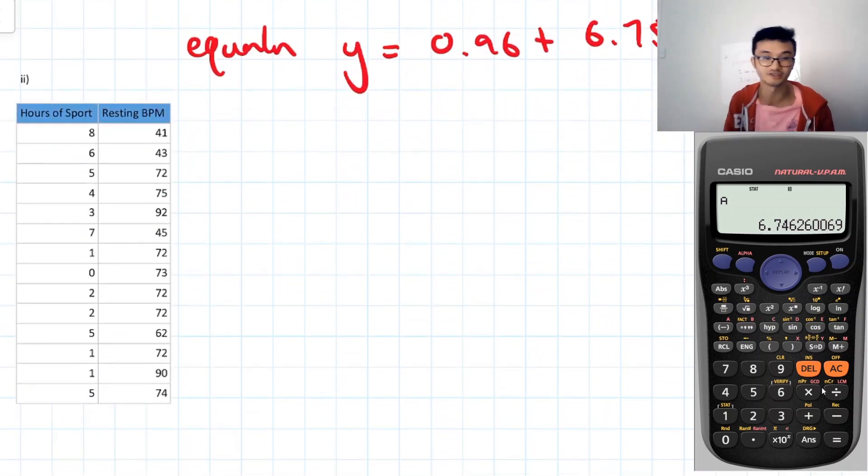So the next questions are a similar idea. We're just going to be inputting those values in and finding out what is the equation of the line of best fit using this method for these information that we collected in class. So here we've got the hours of sport and resting BPM. So we'd expect there to be a negative correlation there, because the more sport you do, usually the lower your resting BPM. Have a go at this one, see how you go.